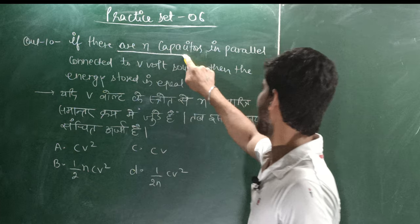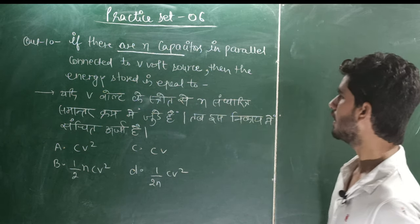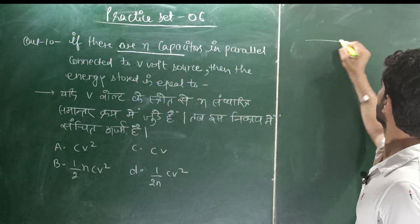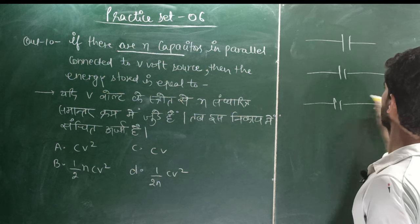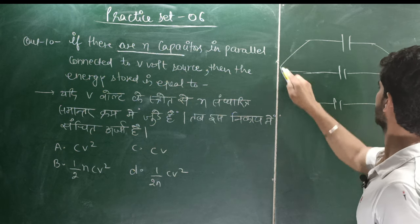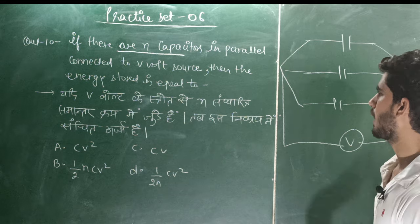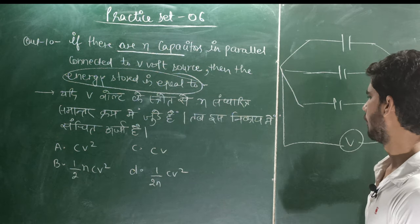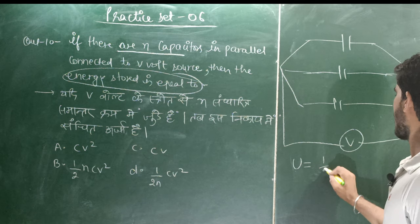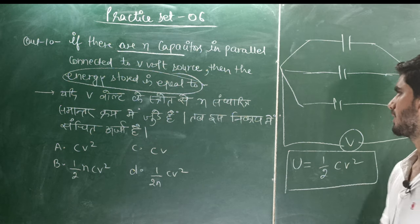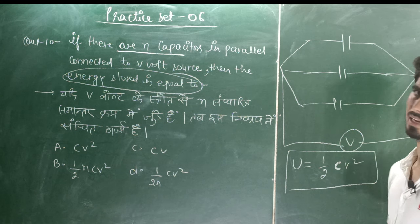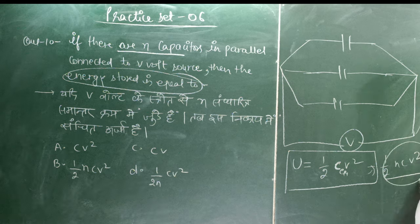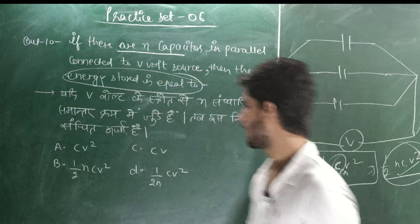Question number 10: if there are n capacitors in parallel connected to a V volt source, the energy stored is equal to? With n capacitors in parallel, the equivalent capacitance is nC. Using the energy formula E = ½CV², the energy stored becomes ½·nC·V² = ½nCV².